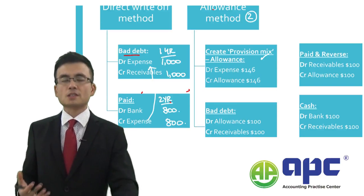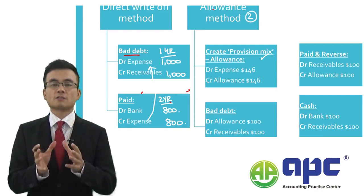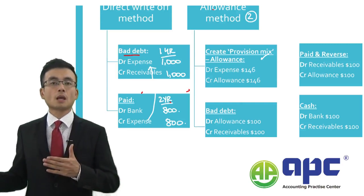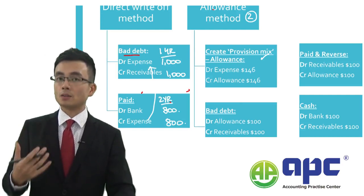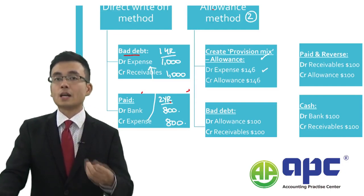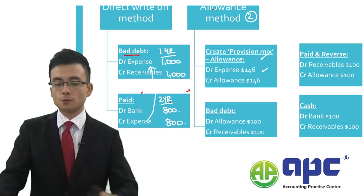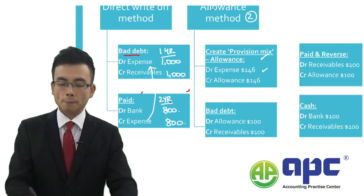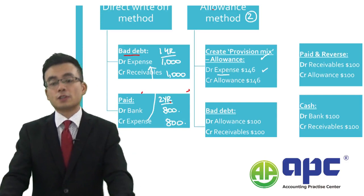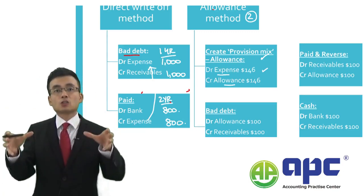Step one: what businesses should do, according to the prudence concept, is to perform the aged analysis on trade receivables and determine how much money the business may not receive in the future. For example, if the business concludes it may not receive $146 — because this is called the allowance method, also known as the allowance for doubtful debt — it creates a contra account to the trade receivables account. We create the first allowance by debiting the allowance for doubtful debt expense for $146, and crediting the allowance for doubtful debt for $146. This is the first step — we are creating a pool, which is the allowance for doubtful debt.